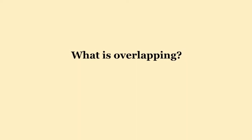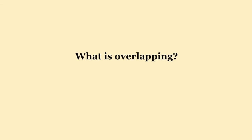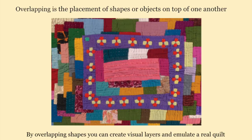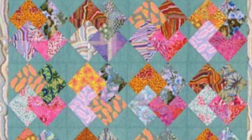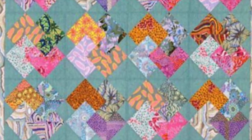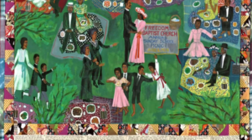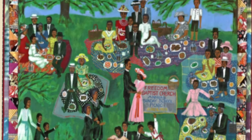Let's begin by discussing what overlapping is. Overlapping is the placement of shapes or objects on top of one another. By overlapping shapes you create visual layers, and we're using these visual layers to emulate a real quilt. The word emulate means to mimic or to copy. So as we're making our drawings, we're not literally overlapping fabric layers like they do in real quilts, but we're going to be overlapping shapes to mimic and copy the feeling of a real quilt.